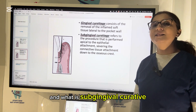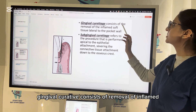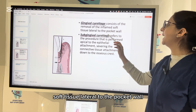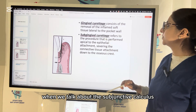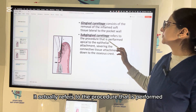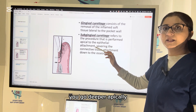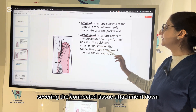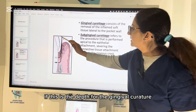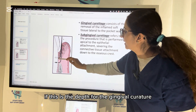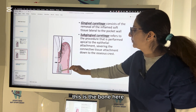What is gingival curettage and what is subgingival curettage? Gingival curettage consists of removal of inflamed soft tissue lateral to the pocket wall. Subgingival curettage refers to the procedure performed apical to the epithelial attachment — you go deeper apically, severing the connective tissue attachment down to the osseous crest. If gingival curettage has a certain depth, subgingival curettage goes deeper, all the way to the osseous crest — to the bone.